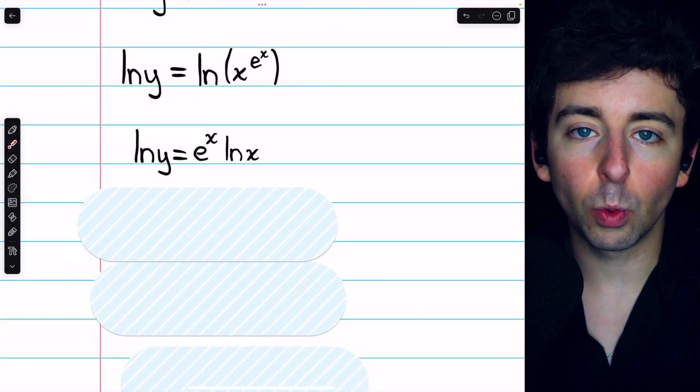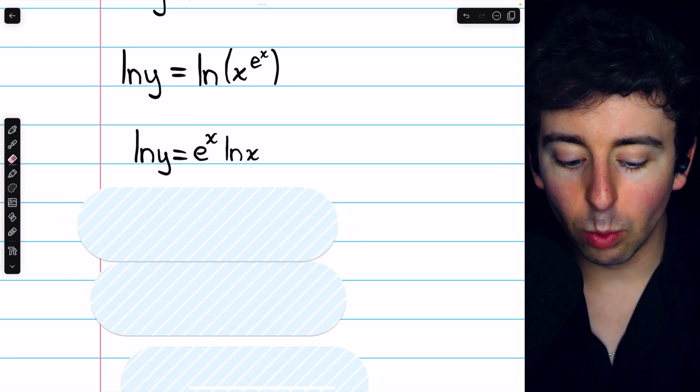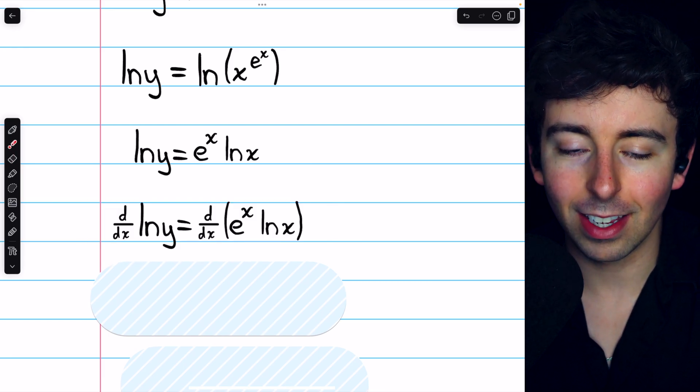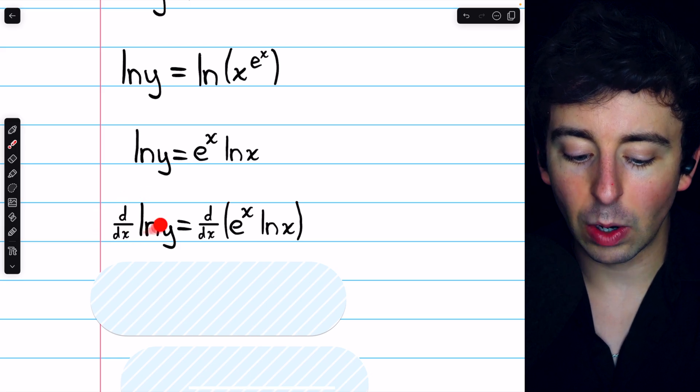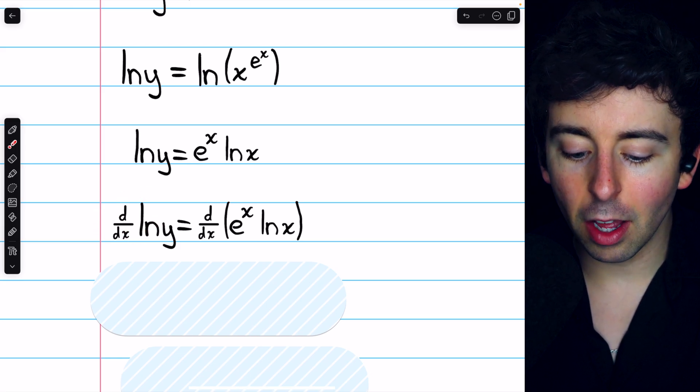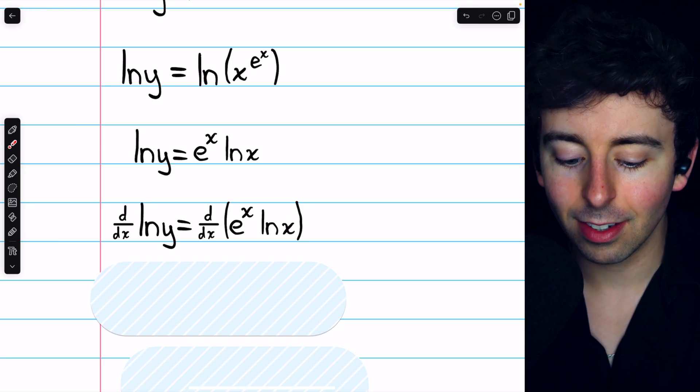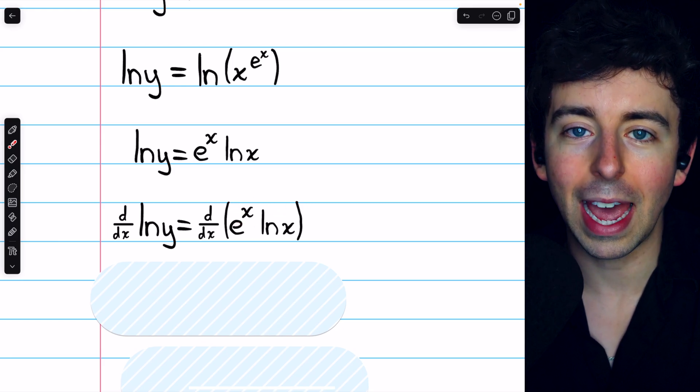Now, we'll take the derivative on both sides of this equation and we're going to have to use implicit differentiation. So on the left, we have the derivative of ln y with respect to x and on the right, we have the derivative of e to the x ln x. So we'll need the product rule for that.